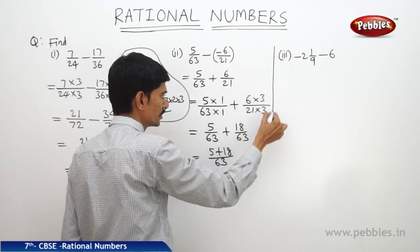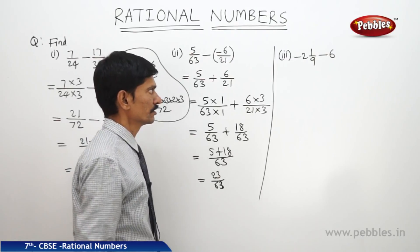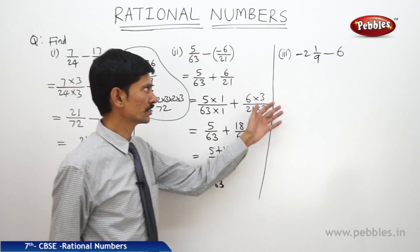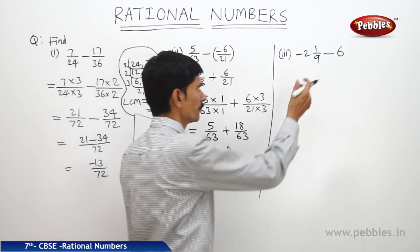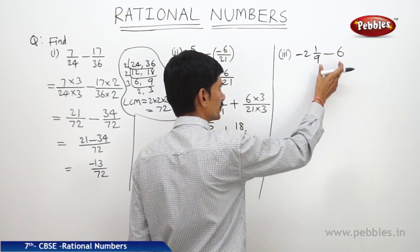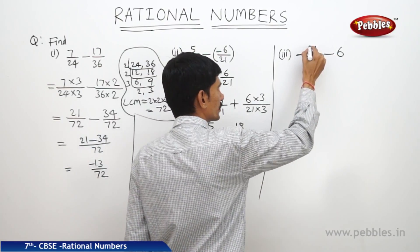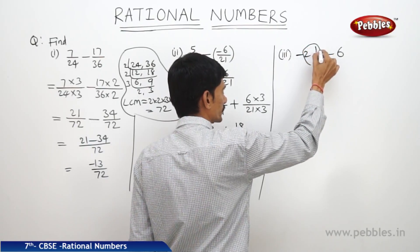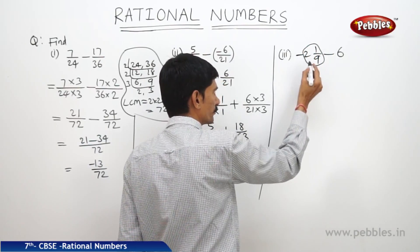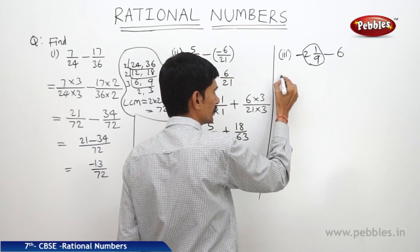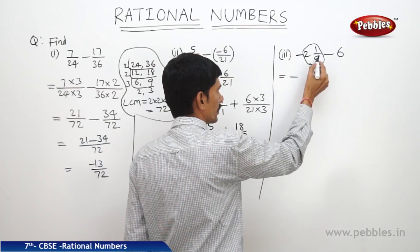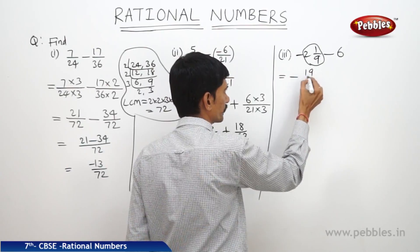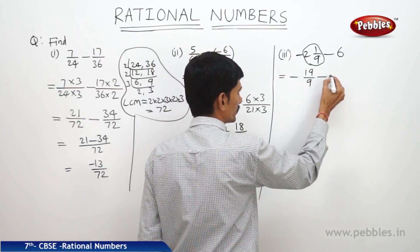Now let us see the third equation: minus 2 1 by 9 minus 6. Here 2 1 by 9 is a mixed fraction. We will first convert it into an improper fraction. This equals minus 19 by 9 minus 6, since 9 twos are 18 plus 1 gives 19.